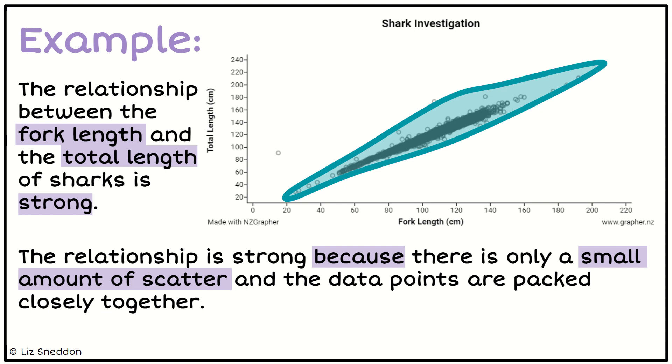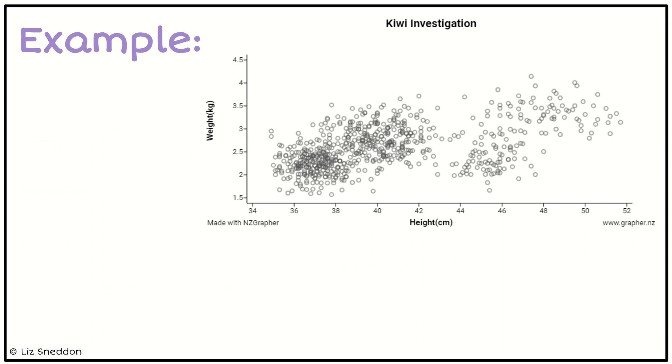Let's have a look at another example. So this is kiwi birds, and it's looking at the relationship between the height and weight of the kiwi birds. So when I draw myself a blob around that, you can see lots and lots of the data - it's taking up most of the graph.